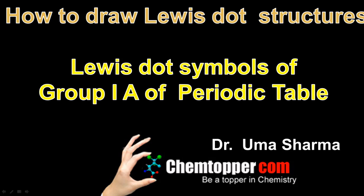Welcome to Chemtopper.com. In this video we are going to learn how to draw Lewis dot symbols of Group 1A elements of the periodic table.